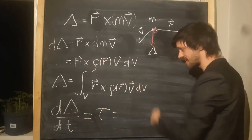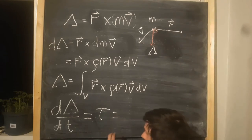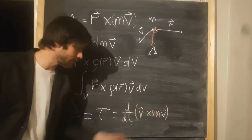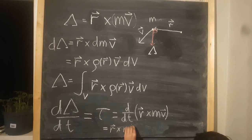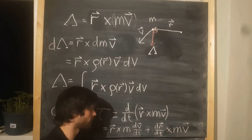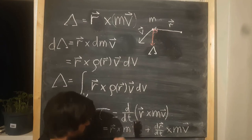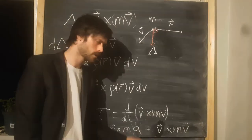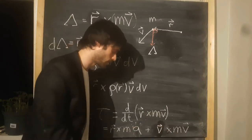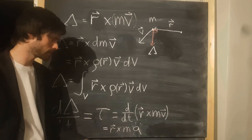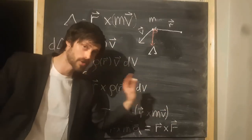We can write this out and expand it. Changing velocity with respect to time is just acceleration; changing position with respect to time is just velocity. But now we have velocity crossed with itself, so that whole term becomes zero. And for those who remember, this is just the position vector crossed with force.